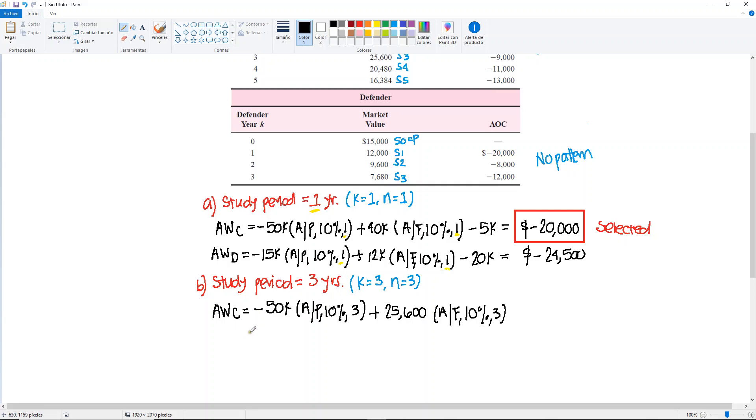So we put the gradient, and I put minus the base, that doesn't need any factor because it's already in A, and the gradient part, which needs to be converted to A. Find A given G, 10%, and this is for three years.